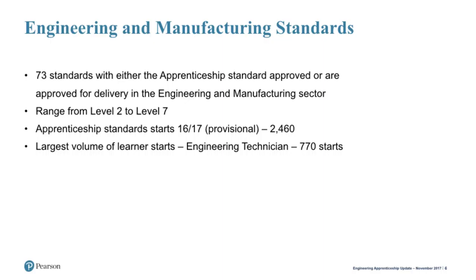There are 73 standards either approved or approved for delivery in the engineering and manufacturing sector, ranging from Level 2 right up to Level 7, with 2,460 apprenticeship starts in 2016–17. The largest volume of starts is within the engineering technician apprenticeship, with 770 starts. Engineering and manufacturing is the biggest sector in terms of volume of standards available. Standards in this sector tend to be longer than the minimum 12 months, demonstrating the depth of skills and knowledge required even at Level 2.